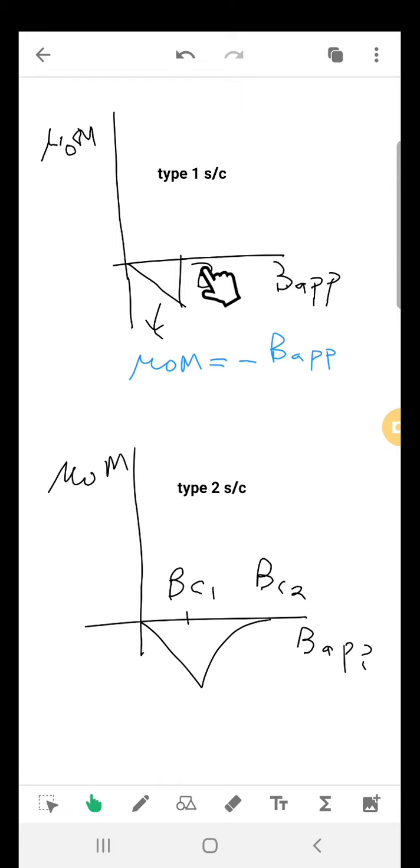There is another type called type 2 superconductor, where some portion of the superconductivity still exists after a certain threshold called the lower critical value of magnetic field has been crossed.